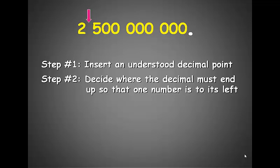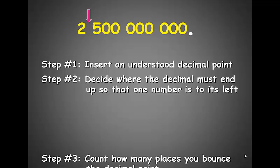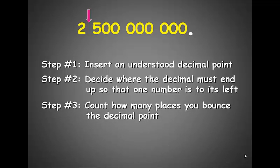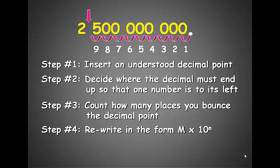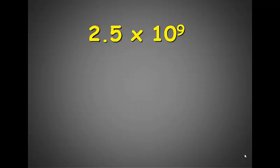If we put the decimal point after the 2 in this number, then it definitely fits that criteria. Our next step now is to count how many places the decimal point has to bounce over so that it's in the proper spot. 1, 2, 3, 4, 5, 6, 7, 8, 9. Then we rewrite our number in the form m times 10 to the nth, as follows: 2.5 times 10 to the number of spaces the decimal point had to bounce over, or 9.